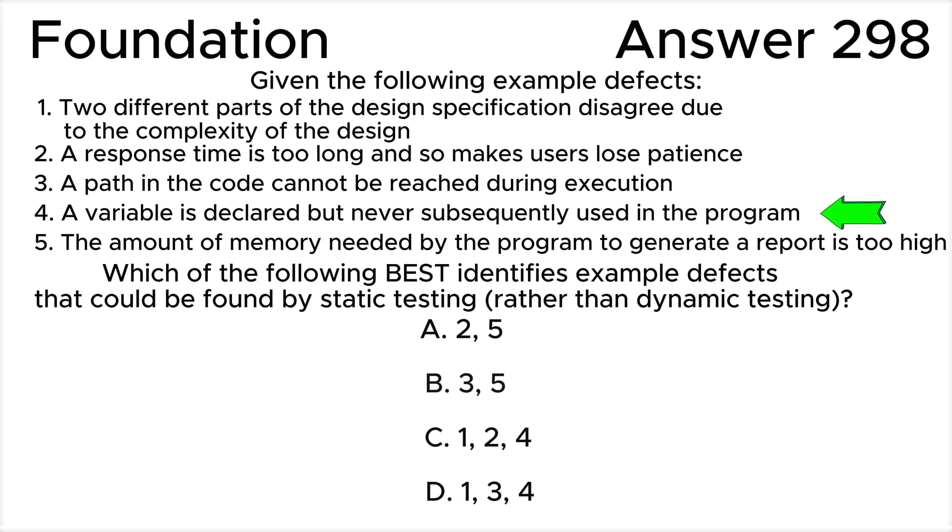Statement 4: A variable is declared but never subsequently used in the program. This is an example of a coding defect which includes variables with undefined values, undeclared variables, duplicated or unreachable code, and excessive code complexity, which can most easily be found by static testing.